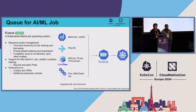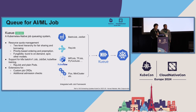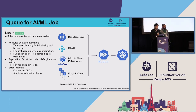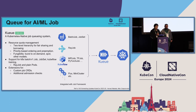Another important component is the queue. Kueue is a Kubernetes-native job queue system. It can be integrated with Ray, Kubeflow, and other frameworks — for example, Ray jobs can be put into a queue. The queue can do resource quota management, priority-based scheduling, and job preemption.